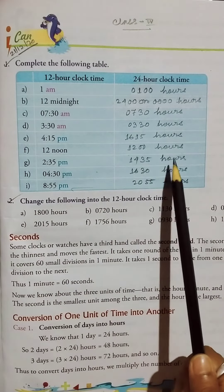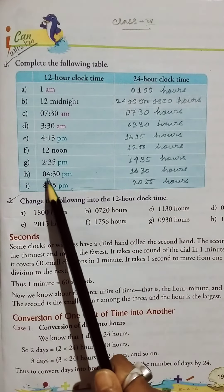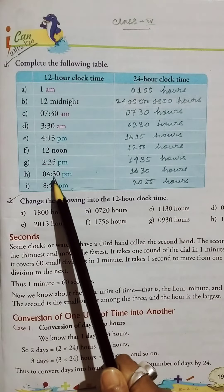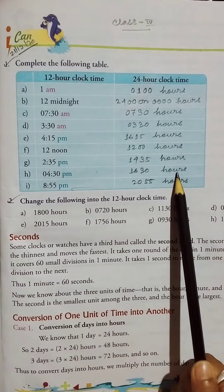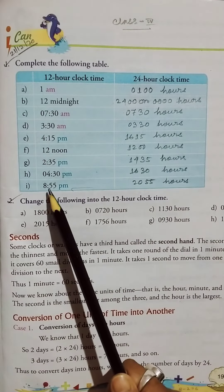So 1435 hours. Okay, then 4:30 p.m., so 1630 hours. Okay, then 8:55 p.m.